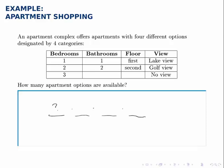There are three ways to choose how many bedrooms to have, two ways to choose how many bathrooms to have, two floors to choose from, and three views to choose from. Multiplying all these together, we get 36 total options for what kind of apartment you could select.